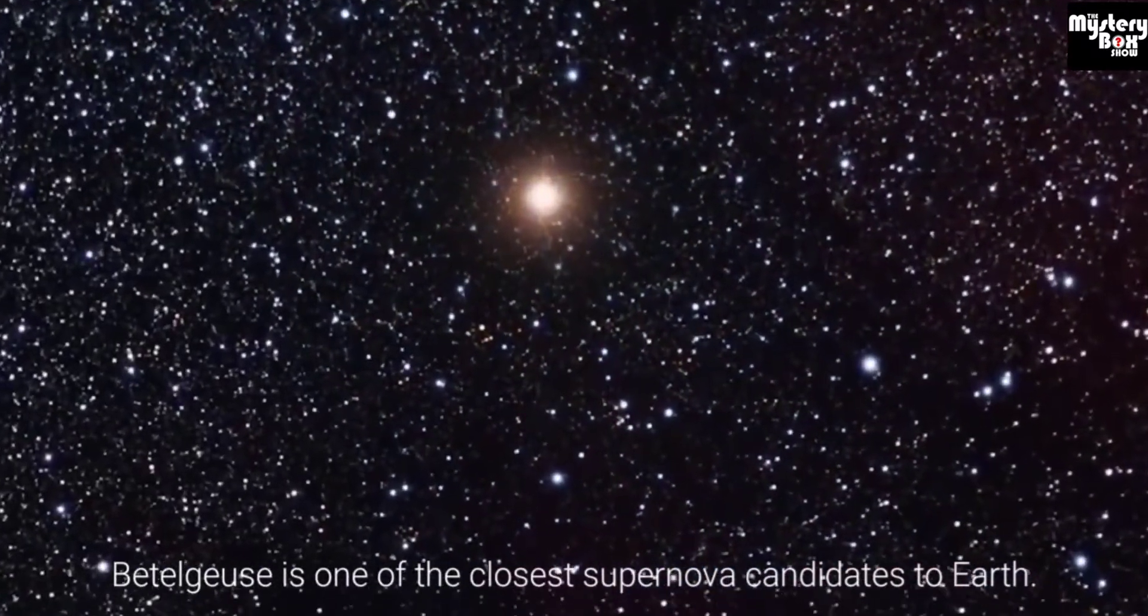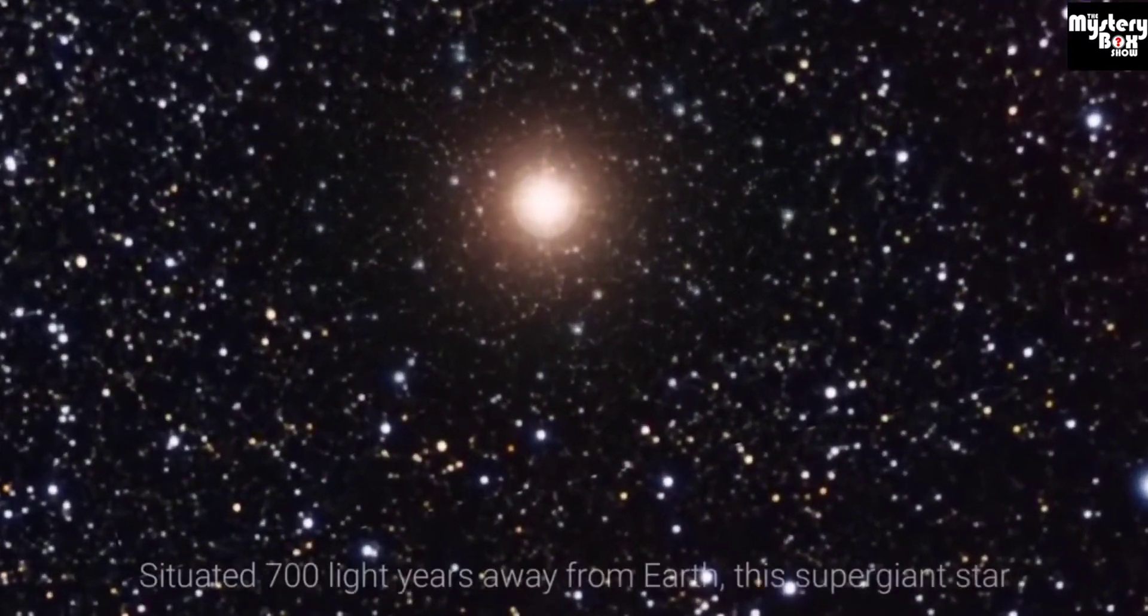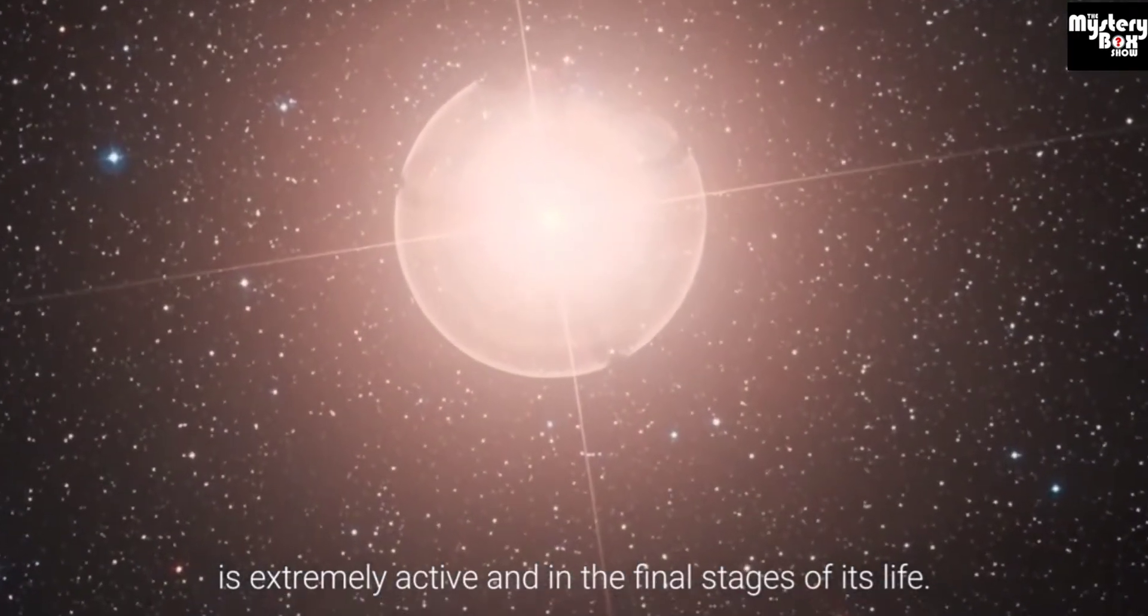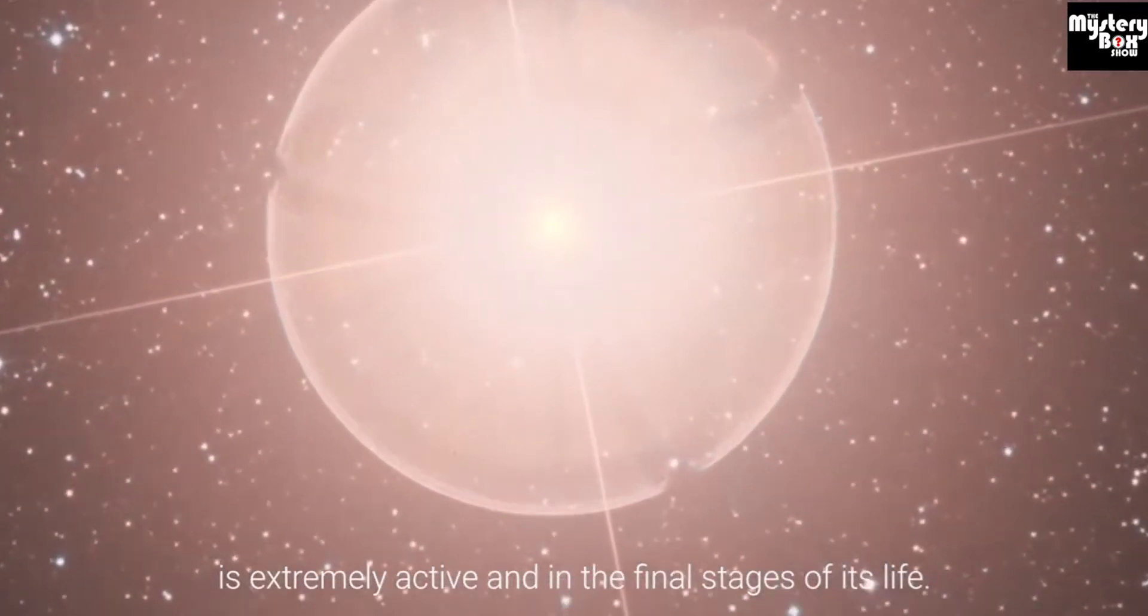Betelgeuse is one of the closest supernova candidates to Earth. Situated 700 light years away from Earth, this supergiant star is extremely active and in the final stages of its life.